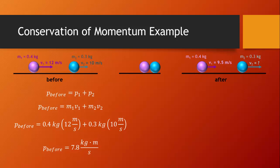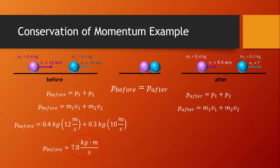Now let's look at after the collision. After the collision, the total momentum is the sum of the momentum of the purple ball and the blue ball — again, P1 and P2. As good practice, we'll write out the equations: M times V for each of them. Now let's remember the law of conservation of momentum: P before equals P after. So we can plug in a value for P after — it's just going to be the same as P before, 7.8 kilogram meters per second.